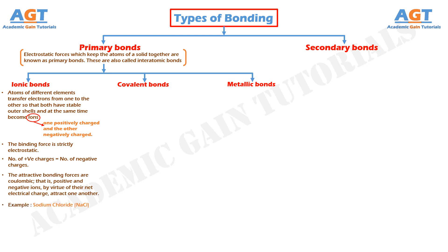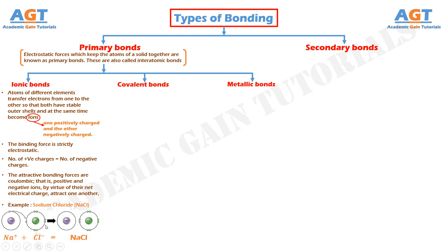A sodium atom can assume the electron structure of neon and a net single positive charge by a transfer of its one valence electron to a chlorine atom. After such a transfer, the chlorine ion has a net negative charge and an electron configuration identical to that of argon. In sodium chloride, all the sodium and chlorine exist as ions. This type of bonding is illustrated schematically in this figure.